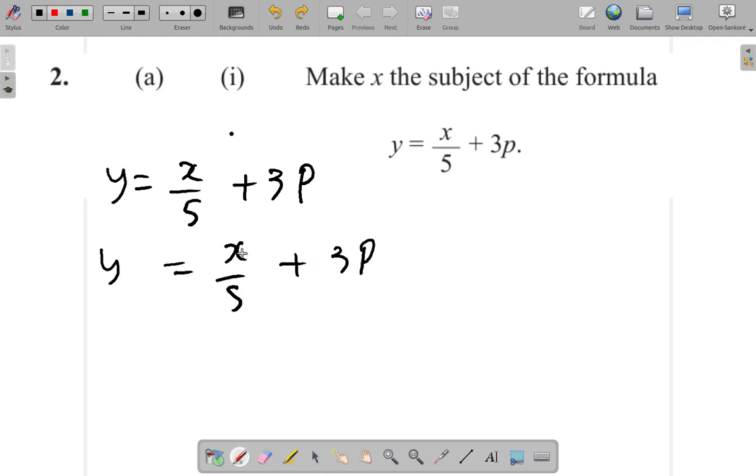you get y equals x over 5 plus 3p. So y times 5, x over 5 times 5, 3p times 5, you get 5y equals 5 cancels 5. You have x plus 3 times p times 5, 15, so you have 15p.